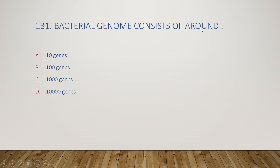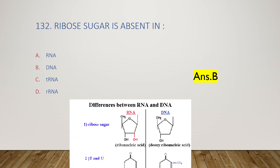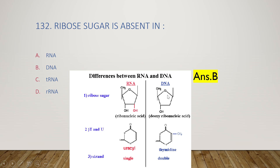The next question: the bacterial genome consists of around 10 genes, 100 genes, 1000 genes, or 10,000 genes? The right answer is option C, 1000 genes. The following question: ribose sugar is absent in RNA, DNA, tRNA, or RNA? The right answer is option B, DNA. This is the structure of DNA showing the sugar backbone.